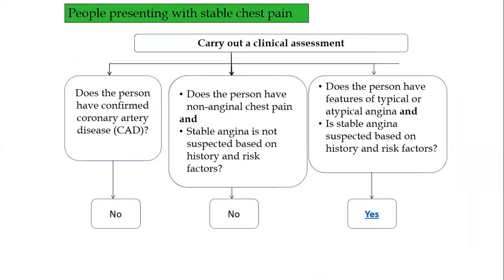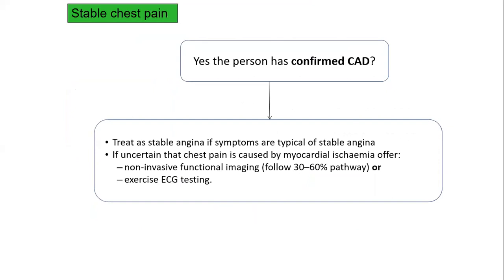After the clinical assessment, we can put patients into three categories. First: does the patient have confirmed coronary artery disease? Second: does the person have non-anginal chest pain where stable angina is not suspected? Third: does the case fit typical angina — as in our case? If somebody has confirmed coronary artery disease presenting with typical chest pain, we can proceed to treat as stable angina.